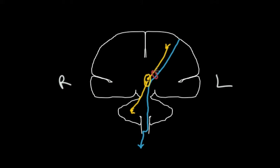These strokes are usually a little above the posterior limb of the internal capsule, or if they hit the posterior limb along with a bit of the thalamus, that's how you wind up with ataxia hemiparesis.